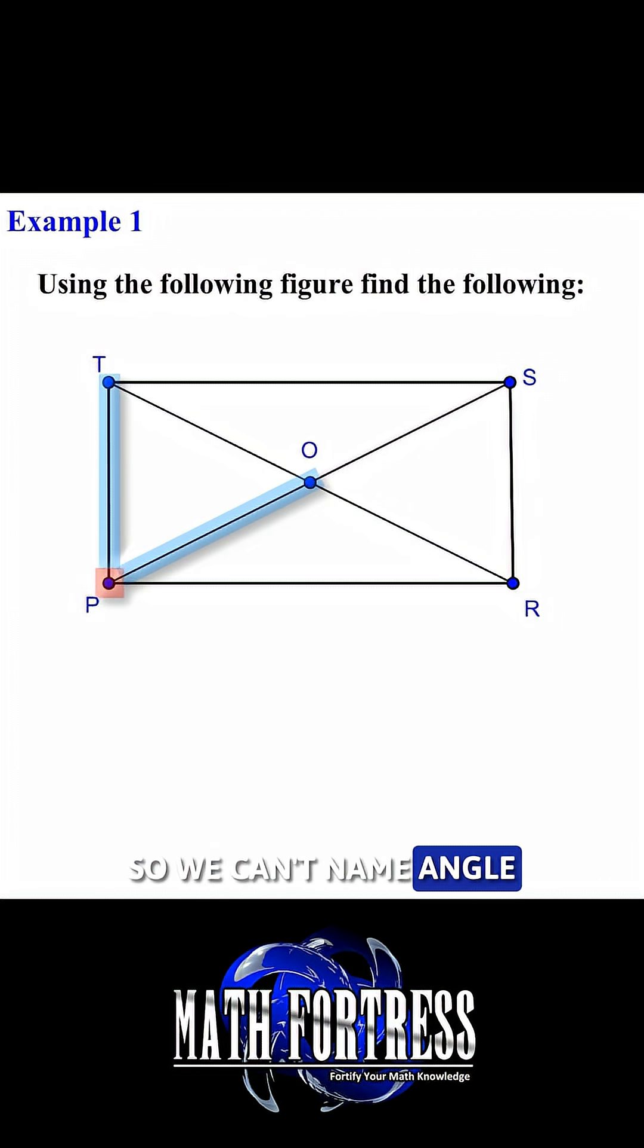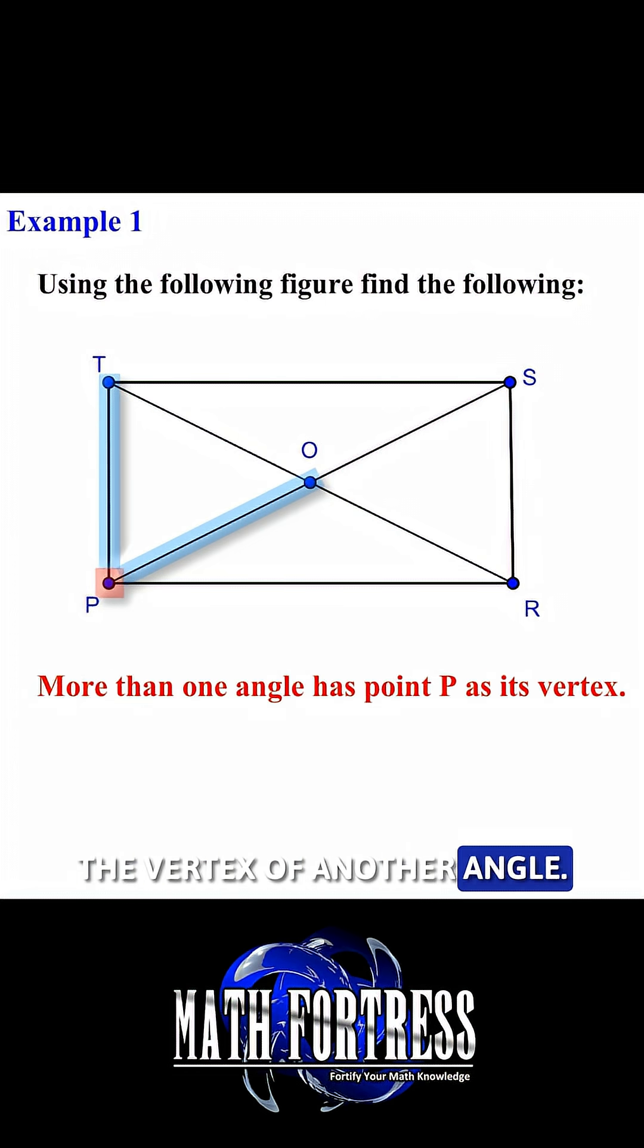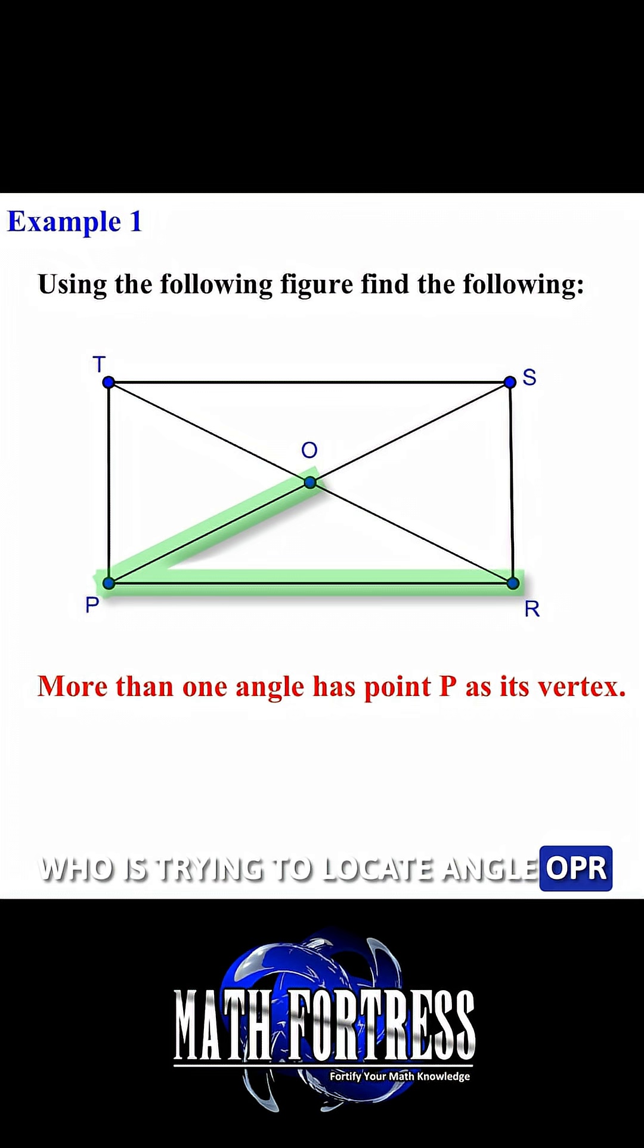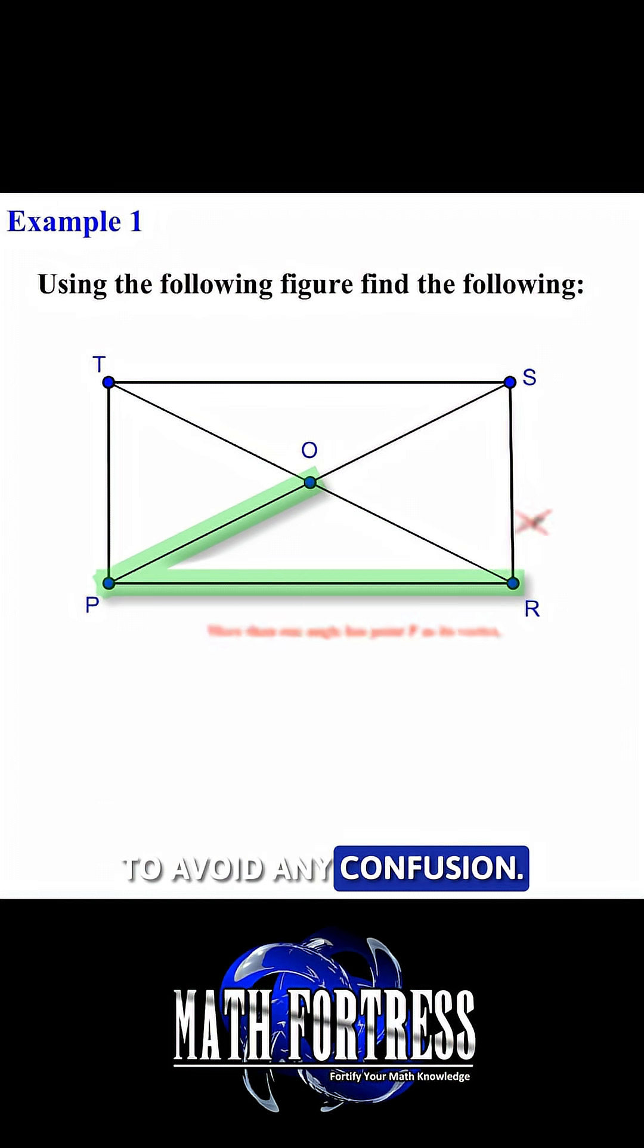So we can't name angle OPR as angle P since this point is also the vertex of another angle. This would be confusing to someone who is trying to locate angle OPR. In an effort to avoid any confusion, we need to name this angle in other ways.